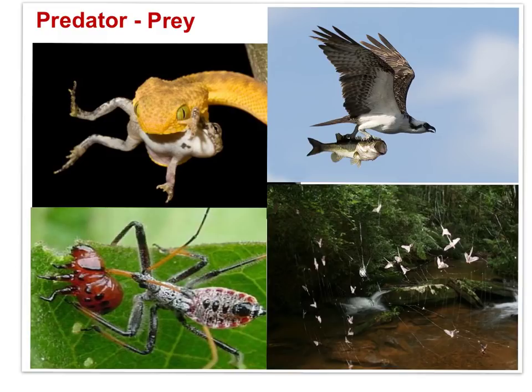Here we have other predator-prey images, and it's important to think about all possible predator-prey relationships beyond the obvious. For example, consider the snake preying on a frog, an insect preying on another insect, or a spider capturing insects in its web.